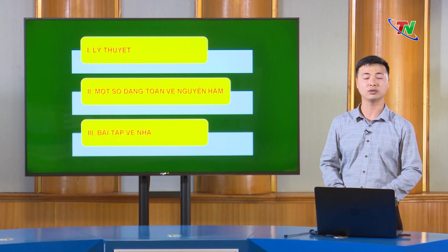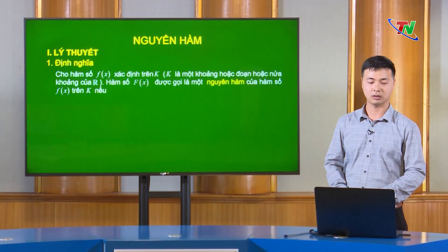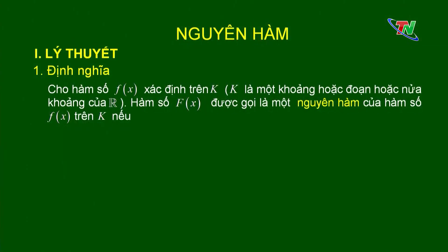Chúng ta bắt đầu từ phần đầu tiên. Nguyên hàm được định nghĩa như sau: Cho hàm số f(x) xác định trên K, trong đó K là một khoảng, hoặc một đoạn, hoặc nửa khoảng của R. Hàm số F(x) được gọi là một nguyên hàm của hàm số f(x) trên K nếu đạo hàm của F(x) bằng f(x) với mọi x thuộc K.